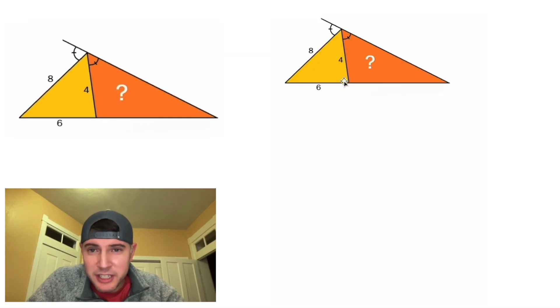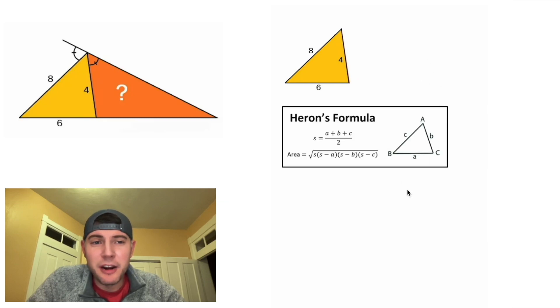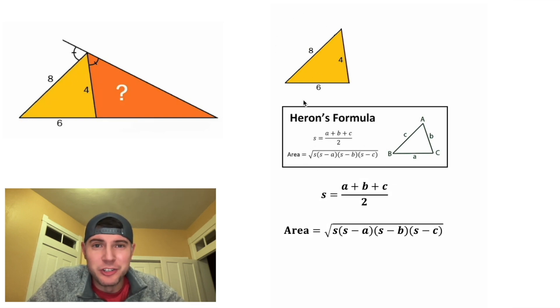We know the three sides of this golden yellow triangle. I want to find the area of it first. Now we can do that with Heron's formula. It uses the semi-perimeter, which is half of the perimeter, and then you just plug it into this formula right here. So let's do it for our golden triangle.